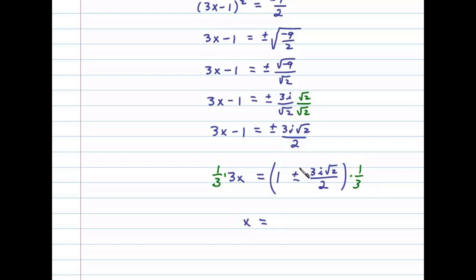On the right side, we distribute 1/3. One-third times 1 is 1/3, plus or minus 1/3 times this term. The 3s cancel, leaving us with (i√2)/2.